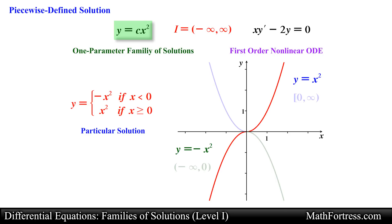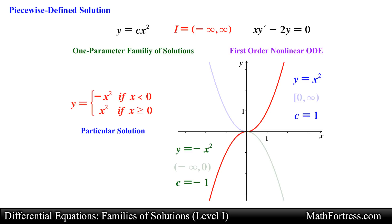Rather, the solution is constructed from the family by choosing c equals negative 1 for x less than 0 and c equals 1 for x greater than or equal to 0. When constructing piecewise defined solutions of differential equations, the piecewise defined function must be differentiable and satisfy the differential equation at the given interval of definition, just like an explicit or implicit solution.